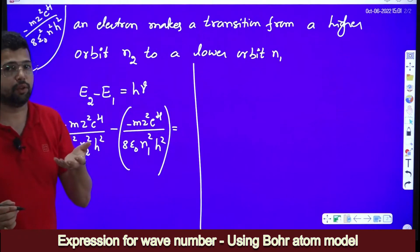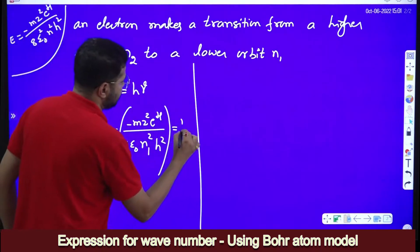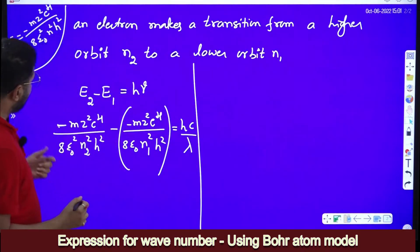I want equation for 1 by lambda. So I will write h into nu means I will write C by lambda. Now, what happens? Except N1 square and N2 square here, all other terms are same and here minus of minus becomes plus.